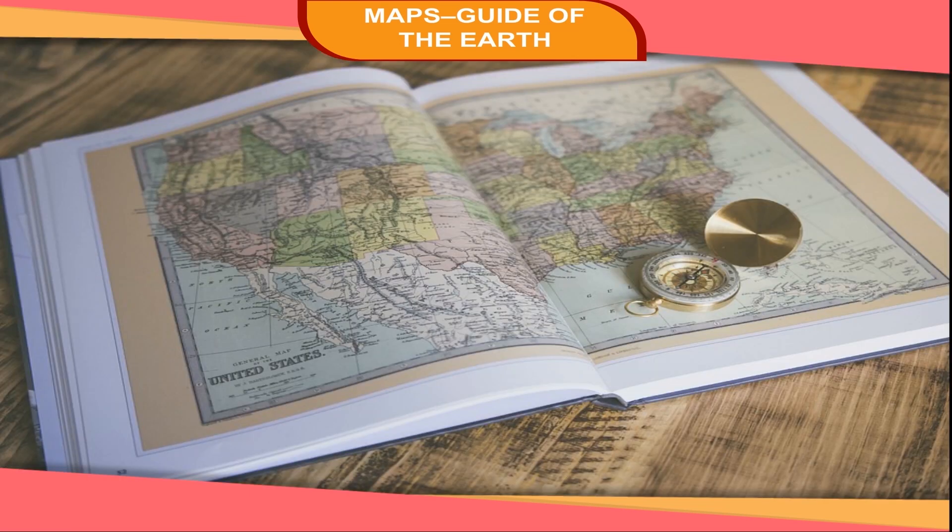A book of maps is called an atlas. You can find a lot of information about various countries, states, cities, etc. in an atlas.